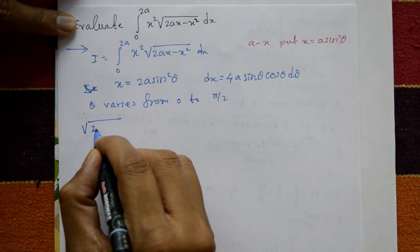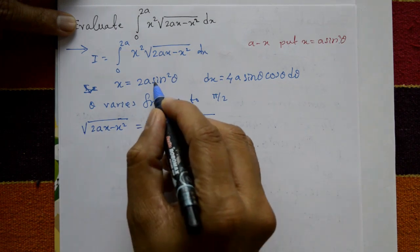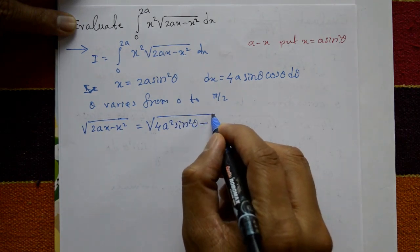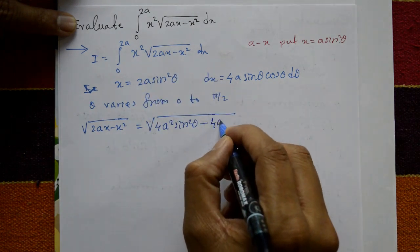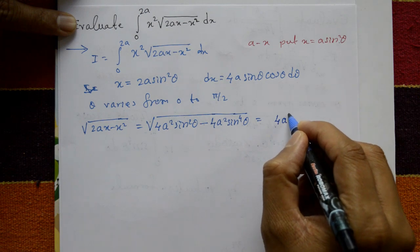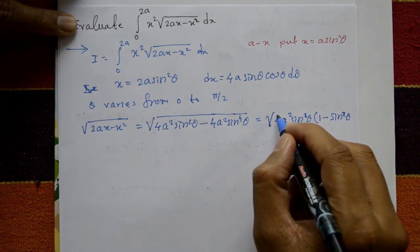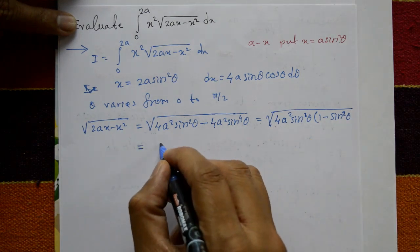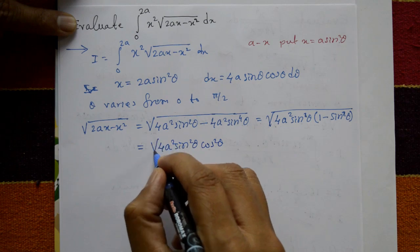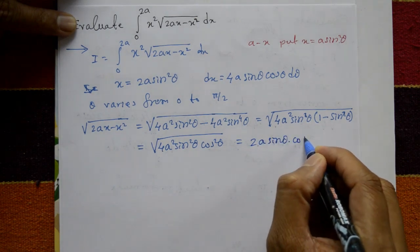Now take the square root: √(2Ax - x²). Here 2Ax means 2A · 2A sin²θ = 4A² sin²θ, minus x² means 4A² sin⁴θ. Take common: 4A² sin²θ, inside is (1 - sin²θ), under square root. This equals √(4A² sin²θ · cos²θ). Square root and square cancel, giving 2A sinθ cosθ.